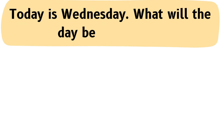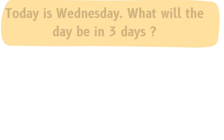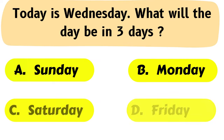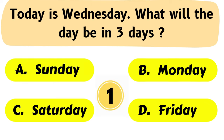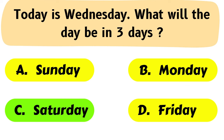Question No. 4: Today is Wednesday. What will be the day in three days? A. Sunday, B. Monday, C. Saturday, D. Friday. The correct answer is Option C: Saturday.